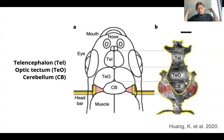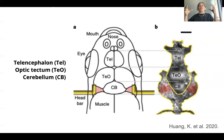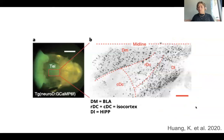Here in panel A, you can see these head bars right behind the optic tectum and the cerebellum. I'm going to have you remember that because we're going to talk about that later in the study by Huang et al. in 2020. Panel B here is just looking at the skull bone structure above each of those brain areas, so telencephalon and the skull behind that bone.